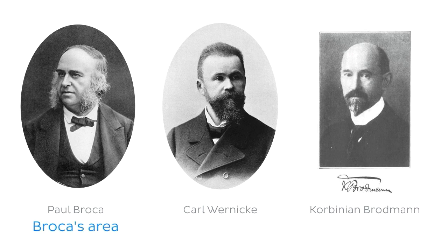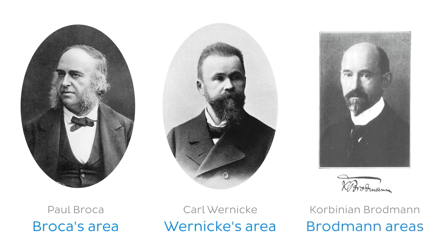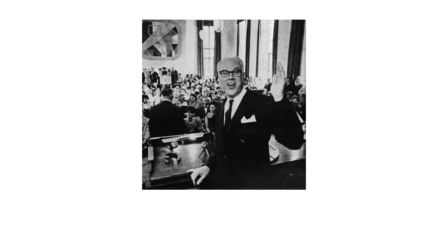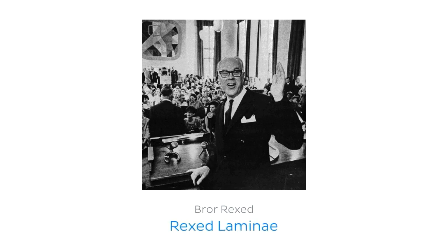For example, Broca's area, Wernicke's area, and Brodmann's areas. Another well-renowned neuroscientist is the Swedish scientist Bror Rexed, who in the 1950s created a new functional division of the spinal cord grey matter called Rexed Laminae, which brings us to the subject of this tutorial: the grey matter of the spinal cord.